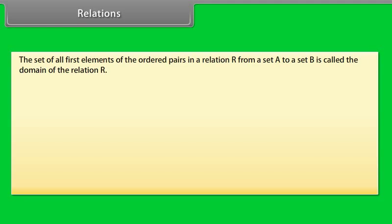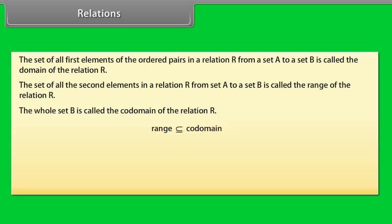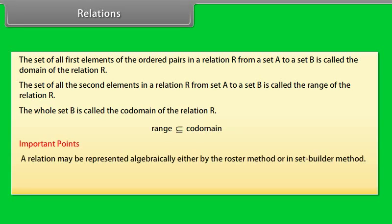The set of all first elements of the ordered pairs in a relation R from set A to set B is called the domain of relation R. The whole set B is called the co-domain of relation R. Range is a subset of co-domain, meaning every element of range is also an element of co-domain. A relation may be represented algebraically by the roster method or set-builder method. An arrow diagram is a visual representation of a relation.